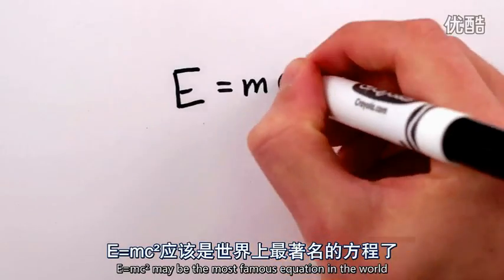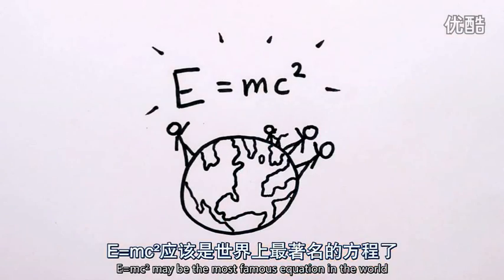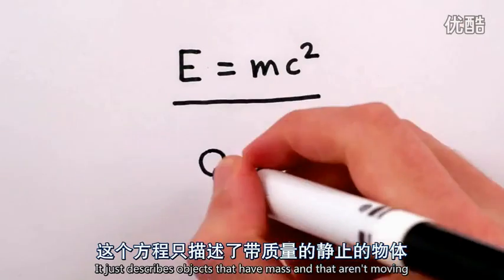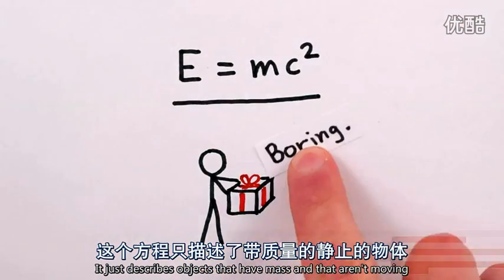E equals mc squared may be the most famous equation in the world, but what you might not know is that it isn't the whole story. It just describes objects that have mass and that aren't moving.